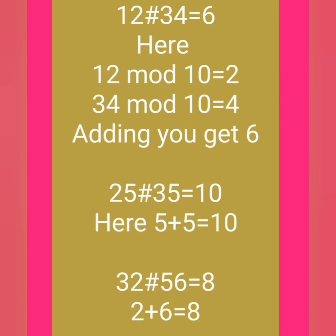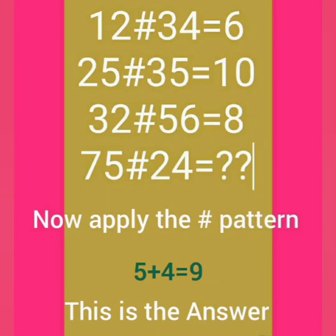For 32 ash 56 is equal to 8, the remainders are 2 and 6, so 2 plus 6 equals 8. So this 'ash' function follows the pattern of the mod 10 function — it extracts the unit digit of each number and adds them together.